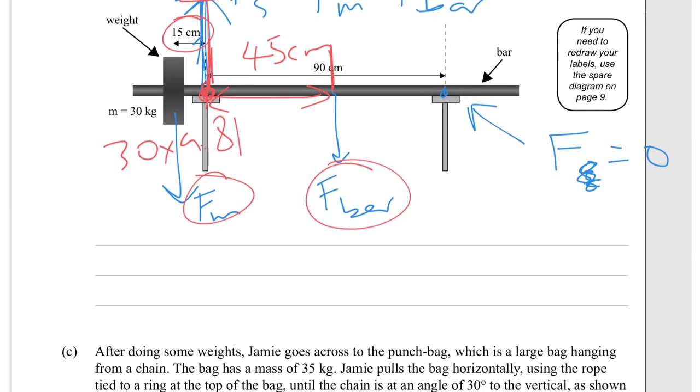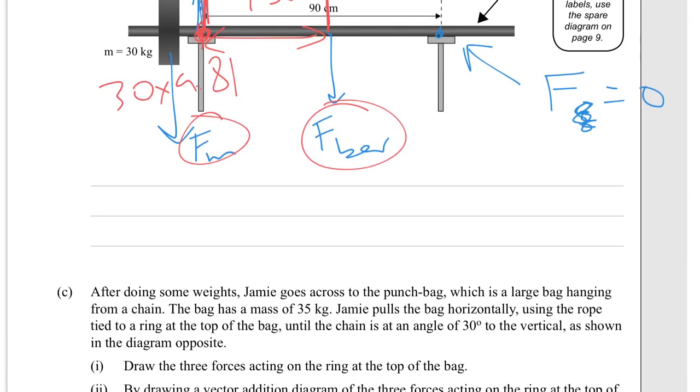If you're being three significant figures, let's write that out: 30 times 9.81 times by 0.15 metres. So it's the left hand side torque going around that way, and the right hand side torque is force of the bar, which we don't know, times by 0.45, which is 45 centimetres in metres. You've only got one unknown there, rearrange and calculate for that.